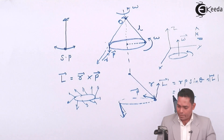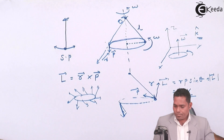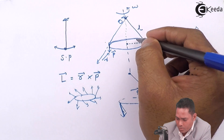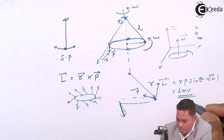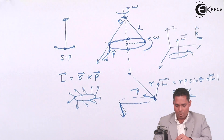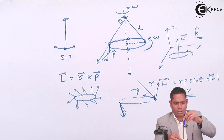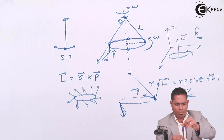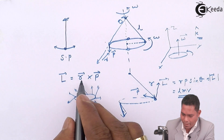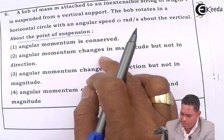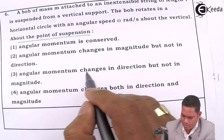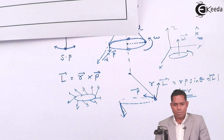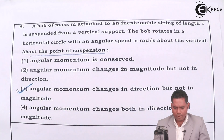So you can see that the magnitude of angular momentum remains the same — mvL sin θ — since omega, m, L, and the angle all remain constant regardless of the bob's position. But the direction of the angular momentum keeps changing as the bob rotates. So option C is correct: the angular momentum changes in direction but not in magnitude. This is the right answer for this question.